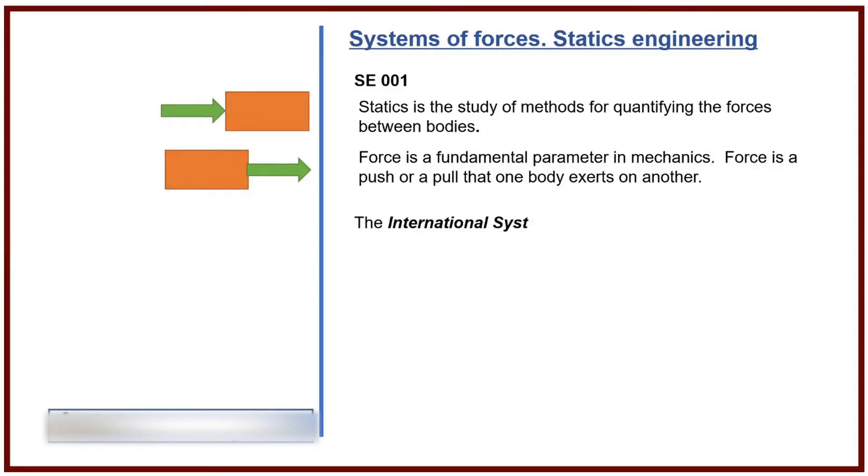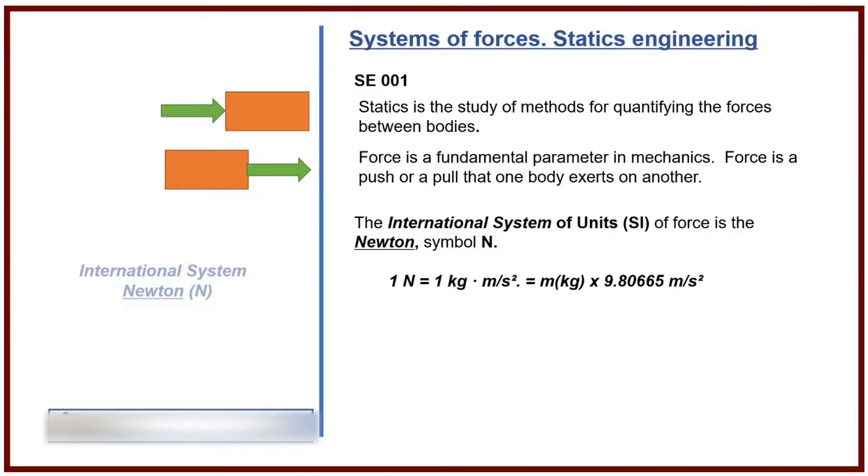The international system of units, SI, of force is the newton, symbol N. 1 newton equals 1 kilogram times meter per second squared, equals 1 kilogram times 9.806.